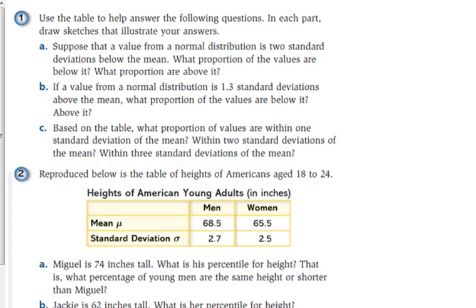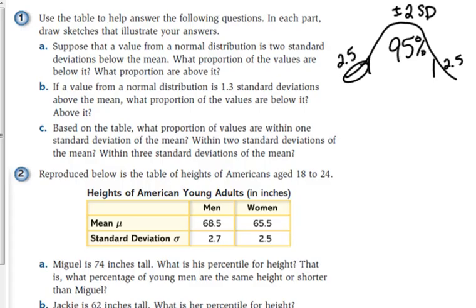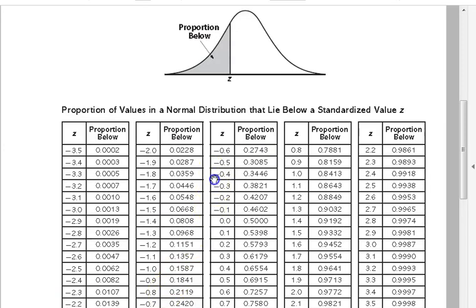2.5, right? Because within two standard deviations, we had 95% that were within two standard deviations. So that means we got 2.5% left over here and 2.5% down here. So 2.5% would be below. Let's see what the table says about that.